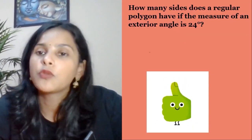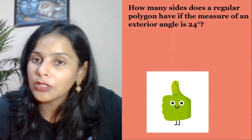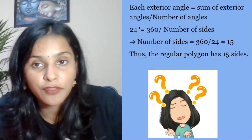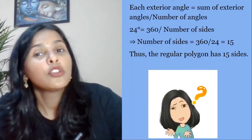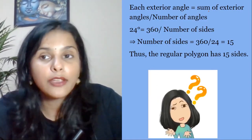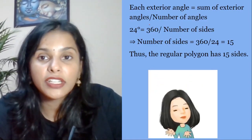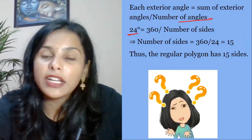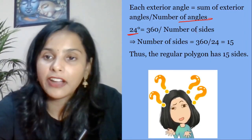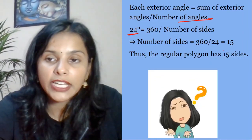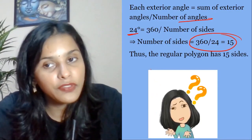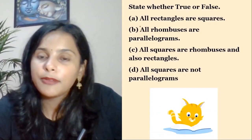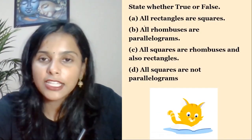Next question: how many sides does a regular polygon have if the measure of an exterior angle is 24 degrees? Each exterior angle equals the sum of exterior angles divided by the number of sides. So 24 equals 360 divided by number of sides. Therefore the number of sides is 15.